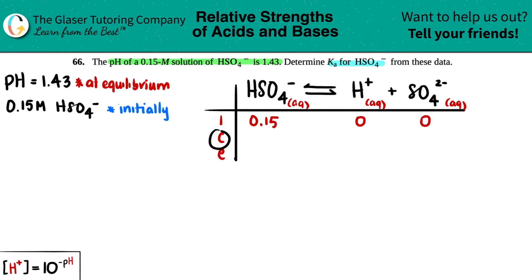C stands for change. You can't go lower than nothing that you have, so the product side is going to increase and the reactant side is going to drop. The product side has to be plus and the reactant side has to be minus. We use the variable X. This would be minus X, plus X, and plus X. Good thing with acids and bases is they're always going to be a one-to-one relationship. E stands for equilibrium. That's just the combination of your initial with your change. So 0.15 minus X. 0 plus X is just X.